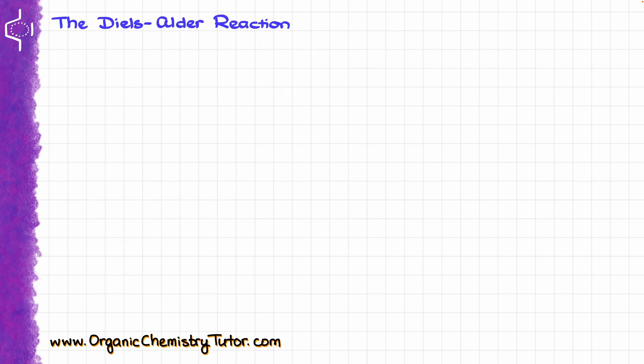Let's start by looking at the Diels-Alder reaction itself. Let's say we have these two molecules reacting with each other, and as a result of this reaction, we are going to move our electrons in this circular way. If I number my atoms as 1, 2, 3, 4, 5, and 6, in this particular example I'm going to make new bonds between carbons 4 and 5, carbons 1 and 6, and there will be a double bond between carbons 2 and 3.